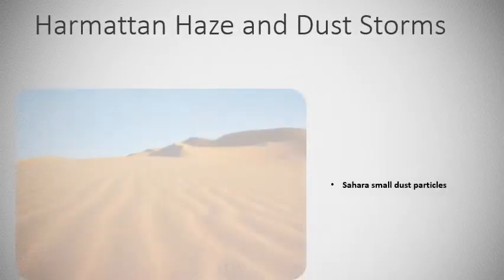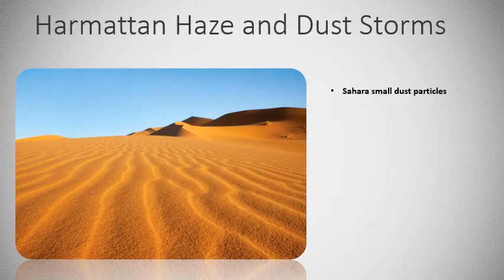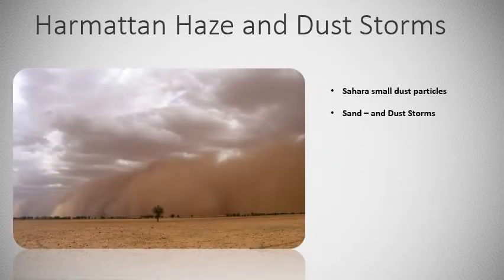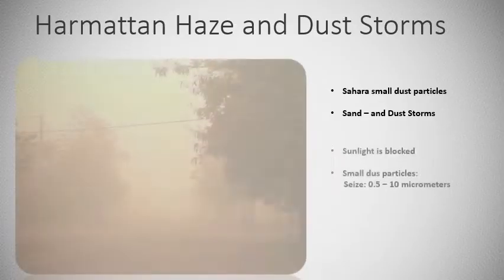When the wind in the Sahara blows over open desert plains it can take a lot of sand from the ground. The very small dust particles, with a size of 0.5 to 10 micrometers, come into suspension in the air. They can then be transported over great distances by this wind — even up to thousands of kilometers. When the air movement is strong enough it can lead to huge sand and dust storms.